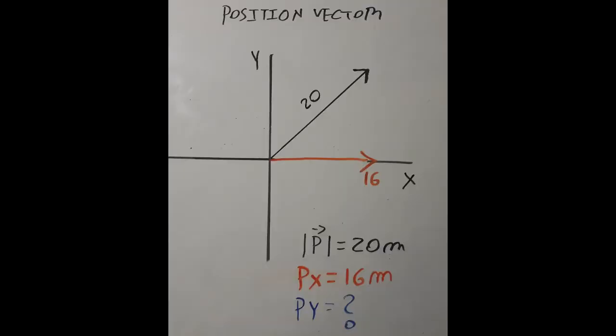Because the magnitude and the x- and y-component make a right triangle, we can use the Pythagorean theorem.